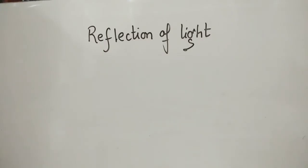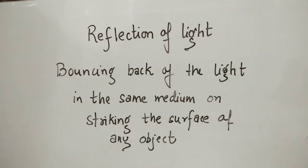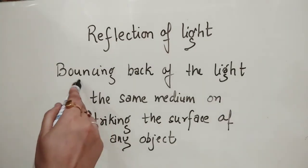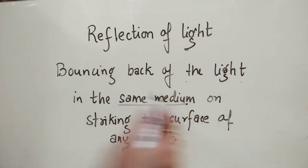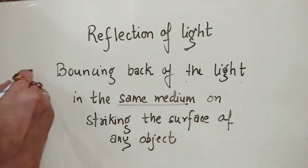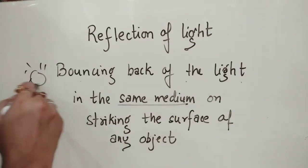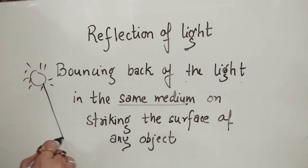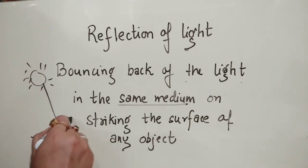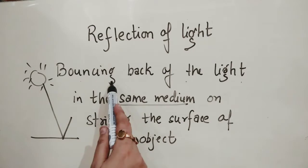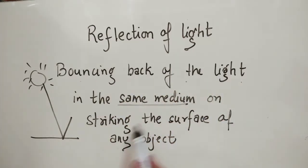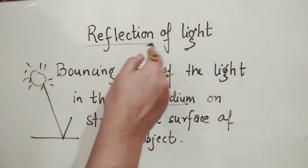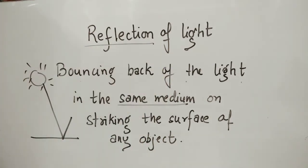The first topic is the reflection of light. It is defined as bouncing back of light in the same medium. For example, there is a source of light hitting a surface and it is bouncing back in the same medium. So, bouncing back of light in the same medium on striking the surface of any object is called reflection of light.